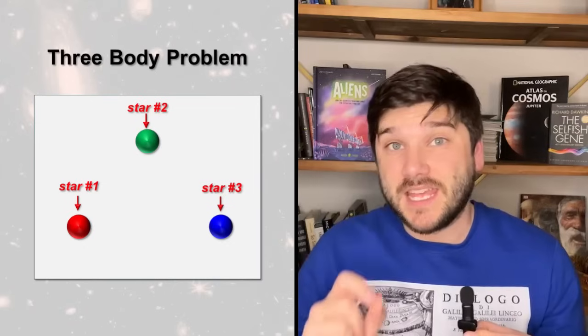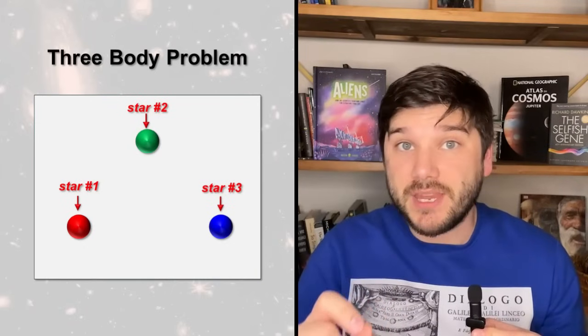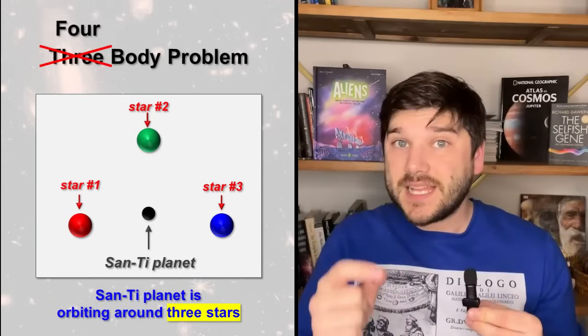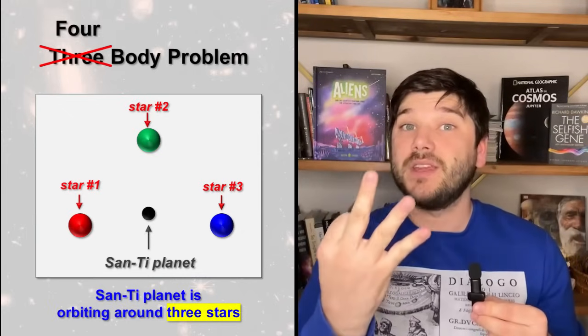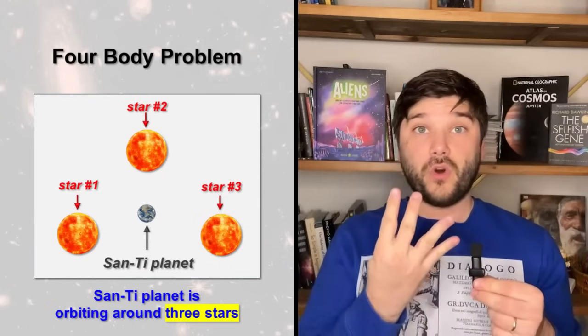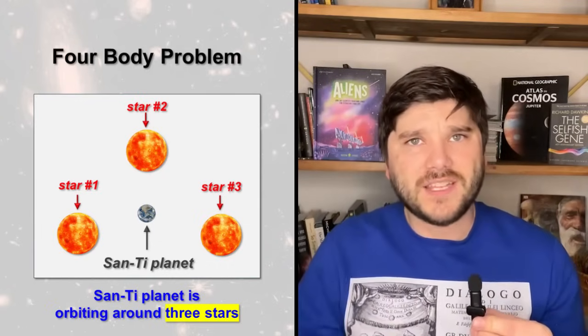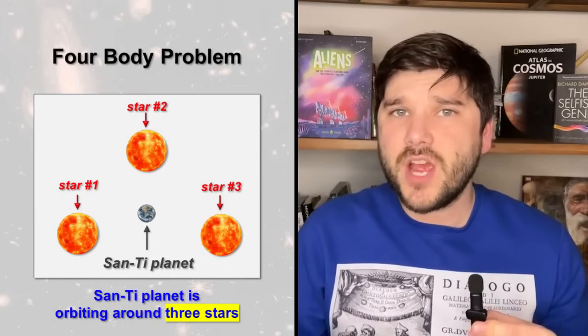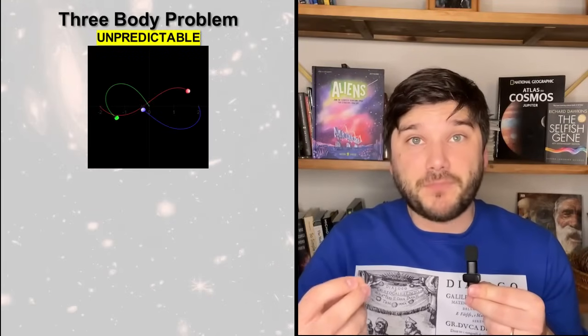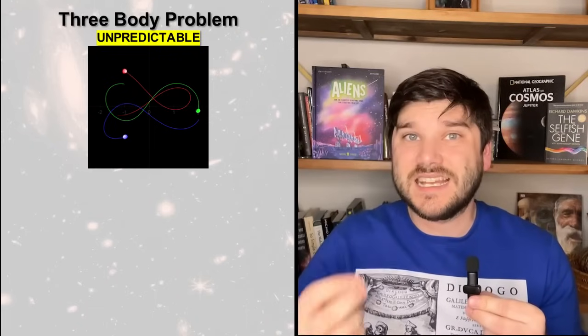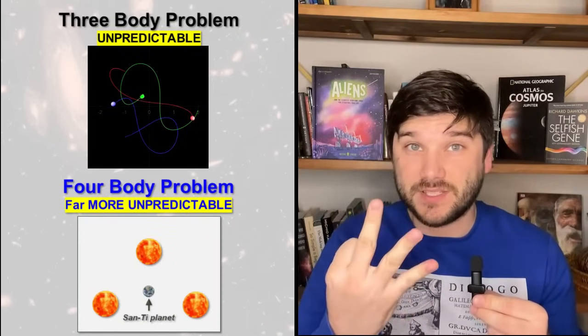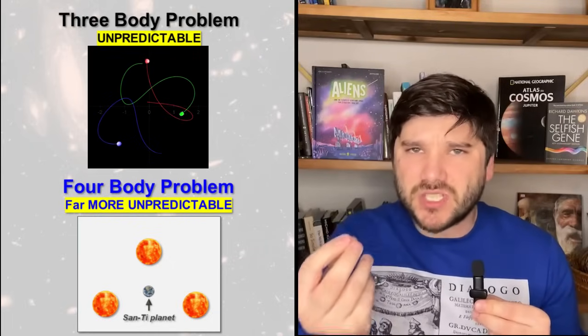Let's come back to the Netflix show. Now listen very carefully, guys. Even though it is called three-body problem, in fact, we are dealing with the four-body system. San-Ti planet is orbiting around three stars. Again, one planet and three stars. All together, there are four objects. In order to find positions of four objects in time, we have to solve four-body problem. You can imagine that if three-body problem has no stable and unpredictable solutions, then to predict the trajectories of four objects - one planet and three stars - is far more complex and impossible task.